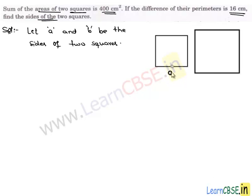Here we take A and B as the sides of two squares and we know that area of a square whose side is S is S². So we are given the sum of areas of two squares which is A² + B² which is equal to 400 cm², and we are given another condition.